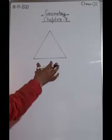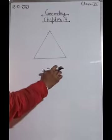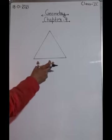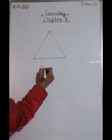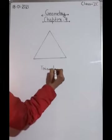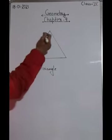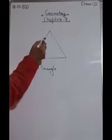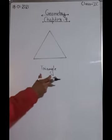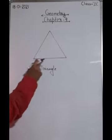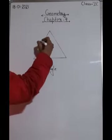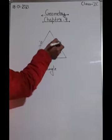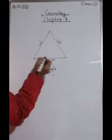I have drawn a polygon here - a simple closed curve entirely made up of line segments. This polygon is called a triangle, which we are very familiar with. A triangle has how many line segments? One, two, three. So when you join these three line segments, you get a triangle. The line segments that join to form a triangle are known as its sides.